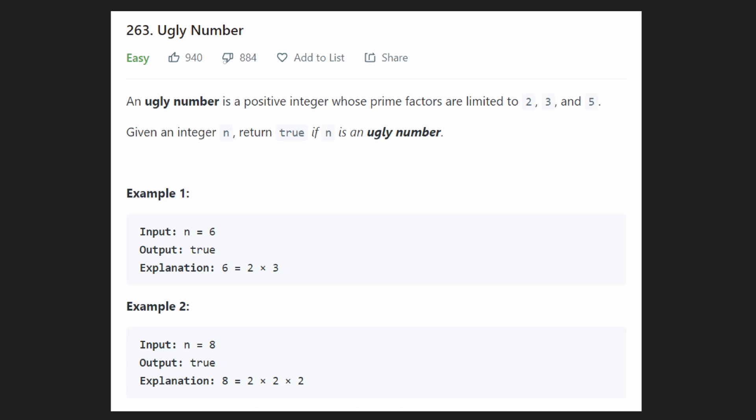Hey everyone, welcome back and let's write some more neat code today. So today let's solve the problem ugly number. We're given an integer n and we want to return true if n is an ugly number. And if it's not an ugly number, we return false. What exactly is an ugly number?